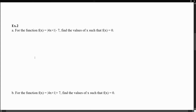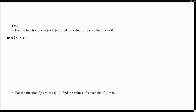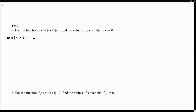Let's look at example two. For the function f(x), we want to find the values of x such that f(x) equals 0 — in other words, find the zeros of this absolute value function. We set f(x) equal to 0, giving us 0 equals the absolute value of 4x plus 1, minus 7. To isolate the absolute value, we add 7 to both sides. This cancels the negative 7.